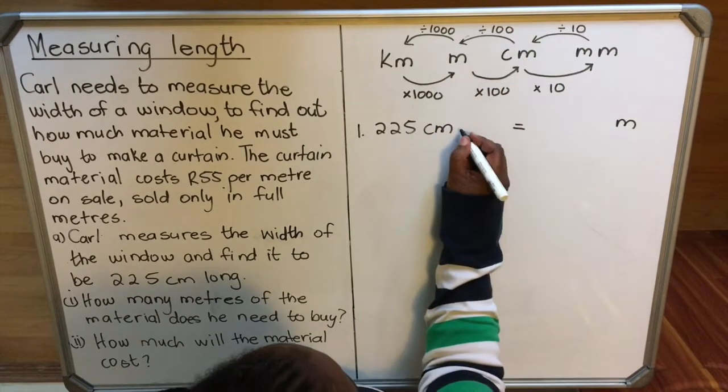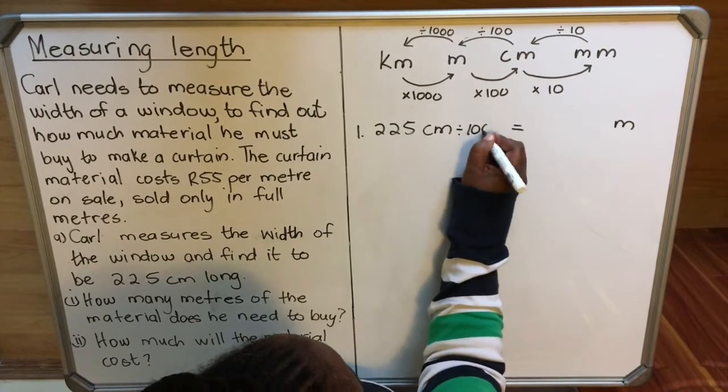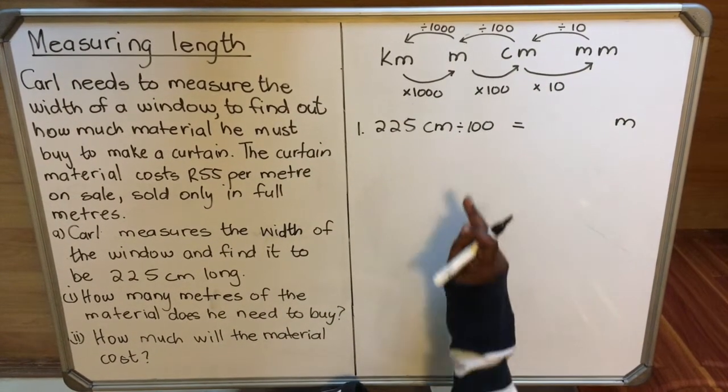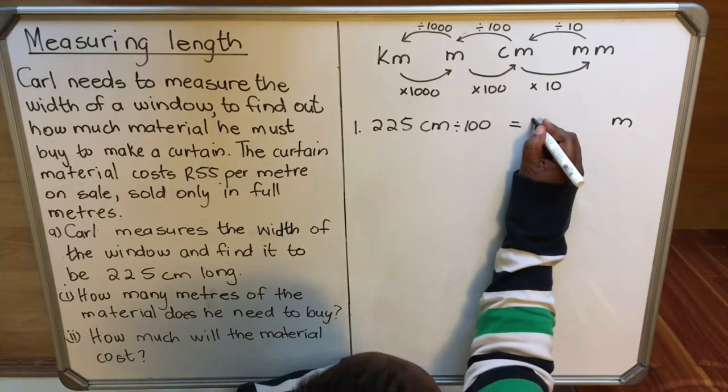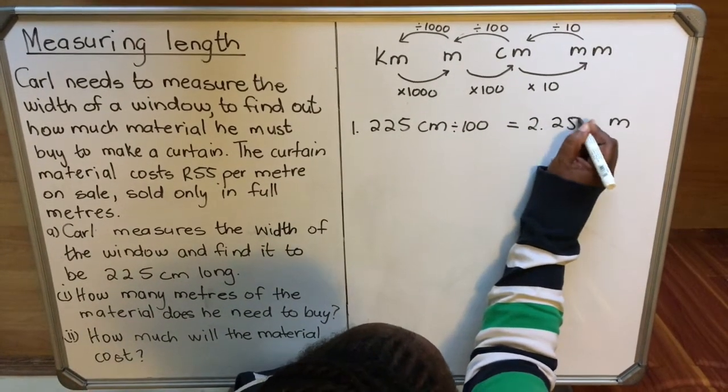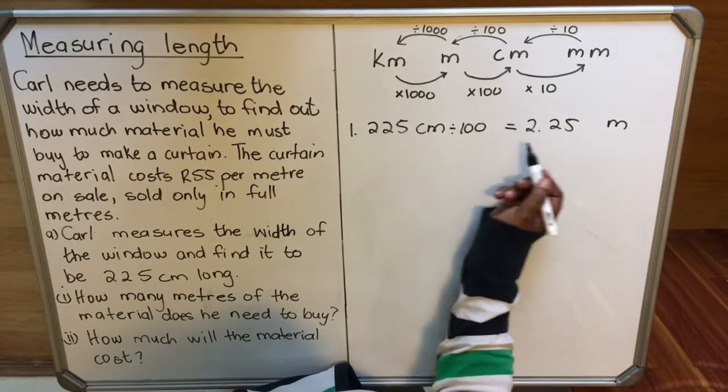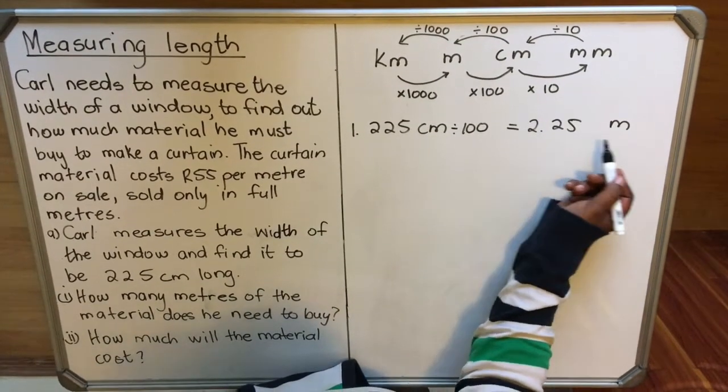You divide by 100. Then you take your calculator, you say 225 divided by 100, you get 2.25 meters. So 225 centimeters equals 2.25 meters.